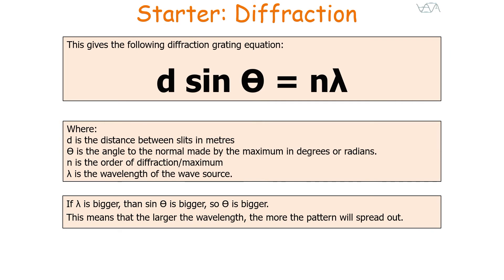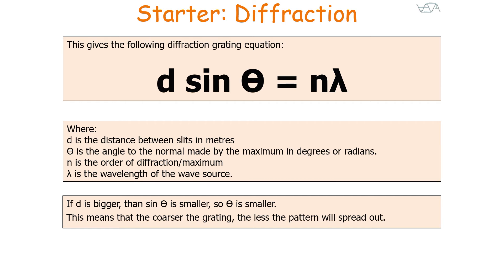The equation shows us a few things. If lambda is bigger, then sin theta is bigger, so theta is bigger — meaning the larger the wavelength of your wave source, the more the pattern will spread out. If D is bigger — the distance between the slits is larger — sin theta becomes smaller, so theta is smaller. Therefore, the coarser the grating, the less the pattern will spread out.